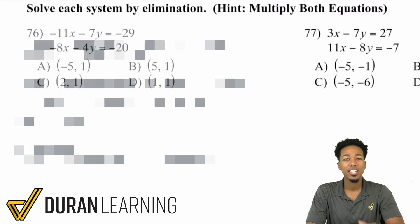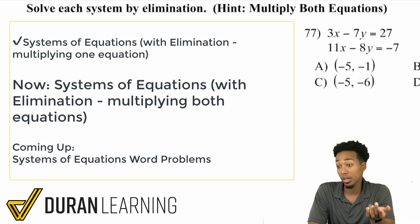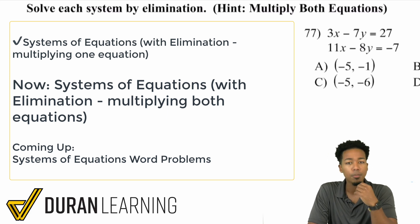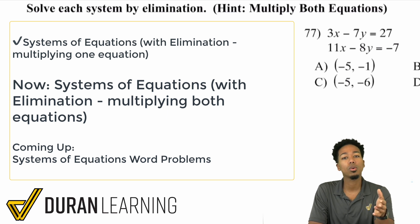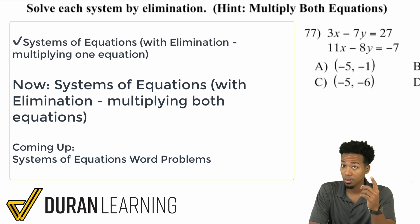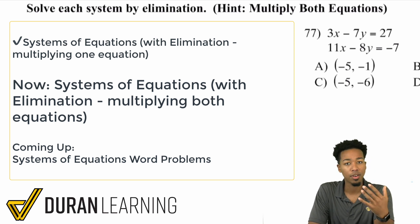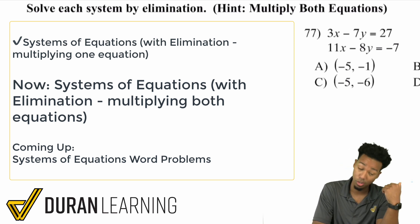Welcome back Math Party People. Here we are, we've made it to what I can say arguably is the hardest type of systems of equations problem. Because in this problem here that we're going to do and the examples to follow, we're going to have to go ahead and modify not one of them but both of the equations.